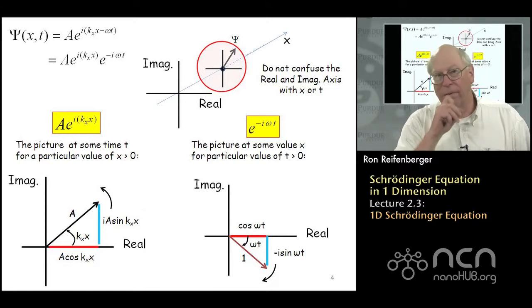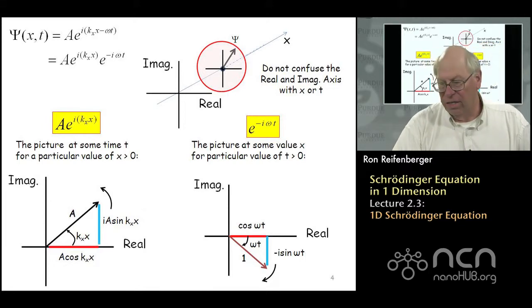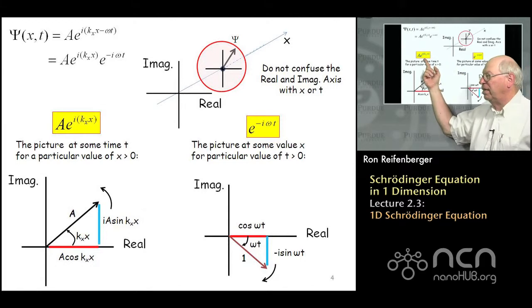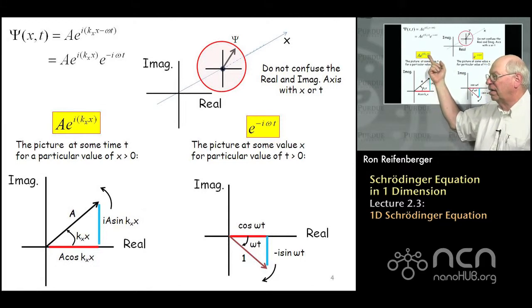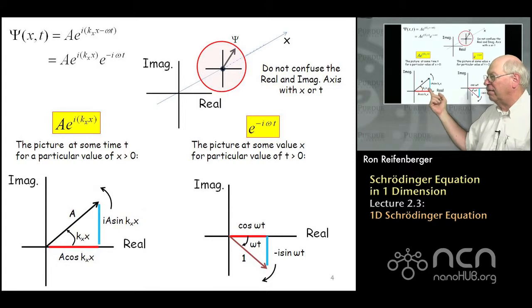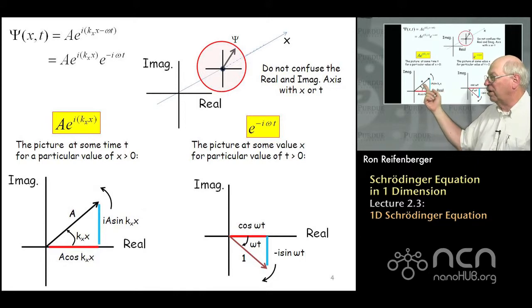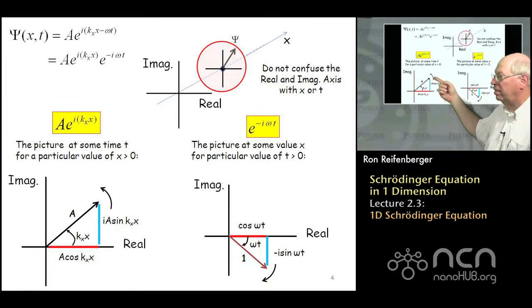The other thing is the way these components rotate is important to keep straight. So for instance, if I just look at the spatial part of the wave function, A e to the i kx times x, and I make a plot of the real and imaginary part of that wave function, the angle is now given by the product of k sub x times x. And so as x increases, this vector A will then rotate in the counterclockwise direction as shown by this arrow.